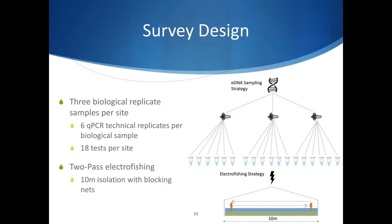At each site, eDNA samples were taken first, followed by metadata samples including temperature, total suspended solids, pH, and conductivity. Electrofishing was then conducted in 10-meter stretches at each site. Our eDNA sampling strategy was designed as a high-resolution study for detecting species in low abundance, such as the brook trout. At each of the 14 sites, we collected three 1-liter biological replicate samples and extracted the DNA on site. We then analyzed the DNA extracts with 6 qPCR technical replicates per biological sample for a total of 18 qPCR tests per site, complemented by two-pass electrofishing in which blocking nets were used to isolate a 10-meter stretch of stream at each site.